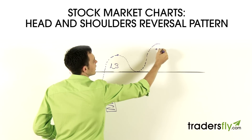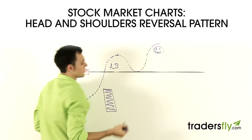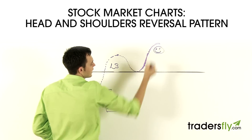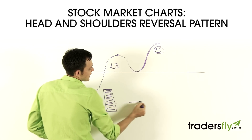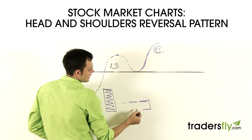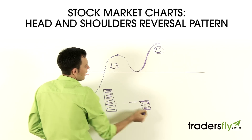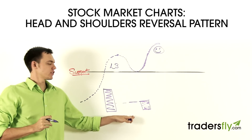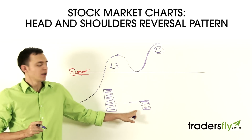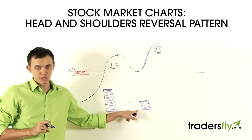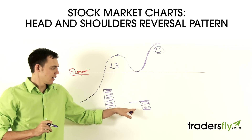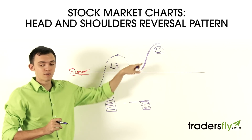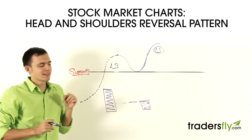So now this would be our head. On this uptrend right here, creating that head, the volume is actually going to be slightly lower or much lower than that left shoulder. And that's why it's key and important to understand and spot this pattern — because with weak volume, you're basically voting for the stock, and people are not voting for it to go up higher. So with that low volume, it's kind of creating that head.